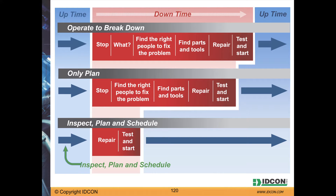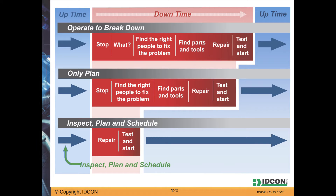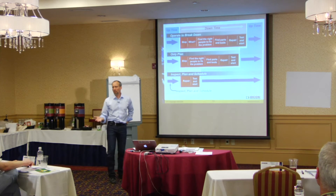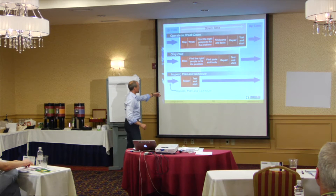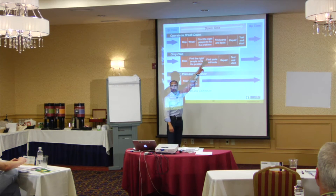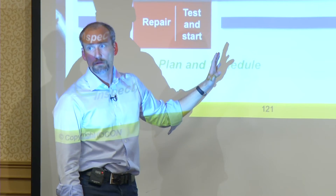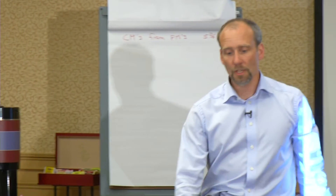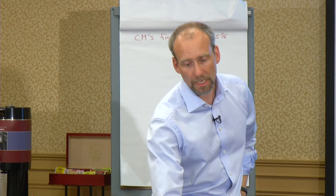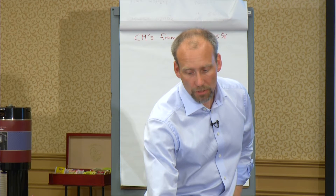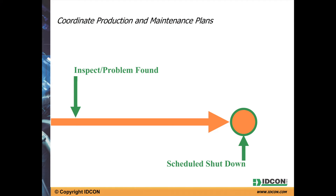If you look at this graph, the cost savings are not primarily on the maintenance side — saving a few maintenance hours is fairly small. The big money is in production time saved. A job might go from eight hours down to two hours; we save a few maintenance hours, but the big savings is six hours of production loss avoided. That's really important to understand — why we plan and schedule.